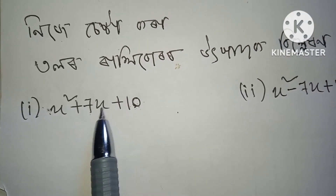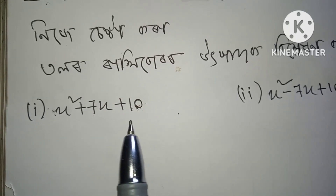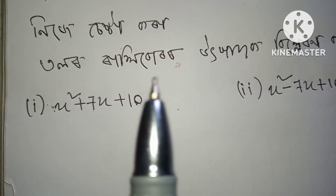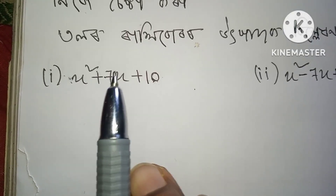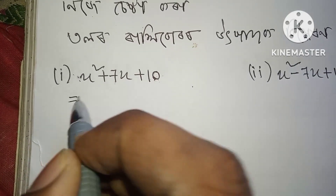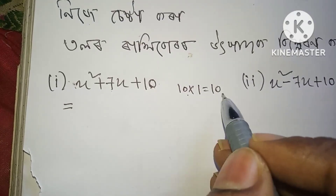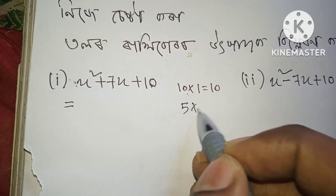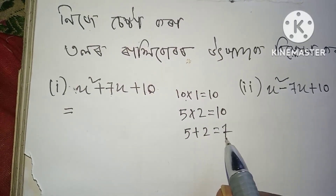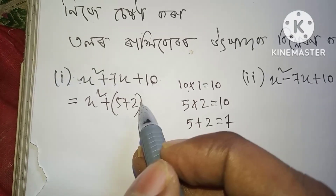Number 1: x square plus 7x plus 10. Arrow 1 — 10 into 1 is 10. For number 2, we need to break it: 5 into 2 gives 10, and 5 plus 2 gives 7. So x square plus 5x plus 2x plus 10.